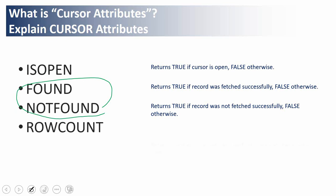The ROWCOUNT attribute returns the number of fetches successfully completed, so using it we can know how many times the fetch operation has returned a value.